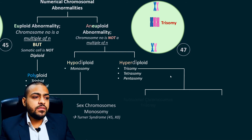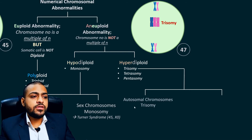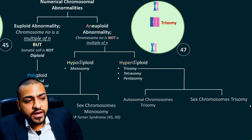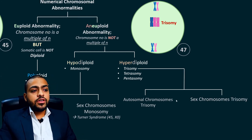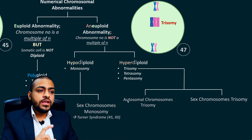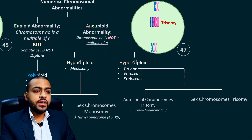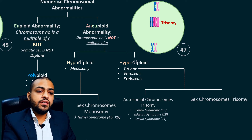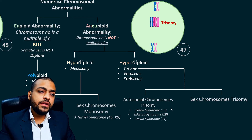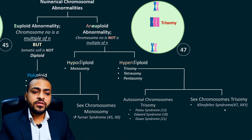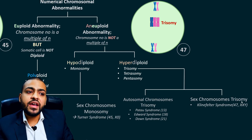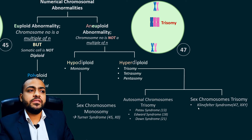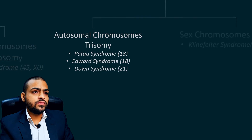Regarding trisomy, it could be autosomal chromosome trisomy or sex chromosome trisomy. Common examples of autosomal trisomy are Patau syndrome (chromosome 13 trisomy), Edwards syndrome (chromosome 18 trisomy), and Down syndrome (chromosome 21 trisomy) — all having 47 chromosomes. Sex chromosome trisomy includes Klinefelter syndrome, where there is one extra X chromosome.